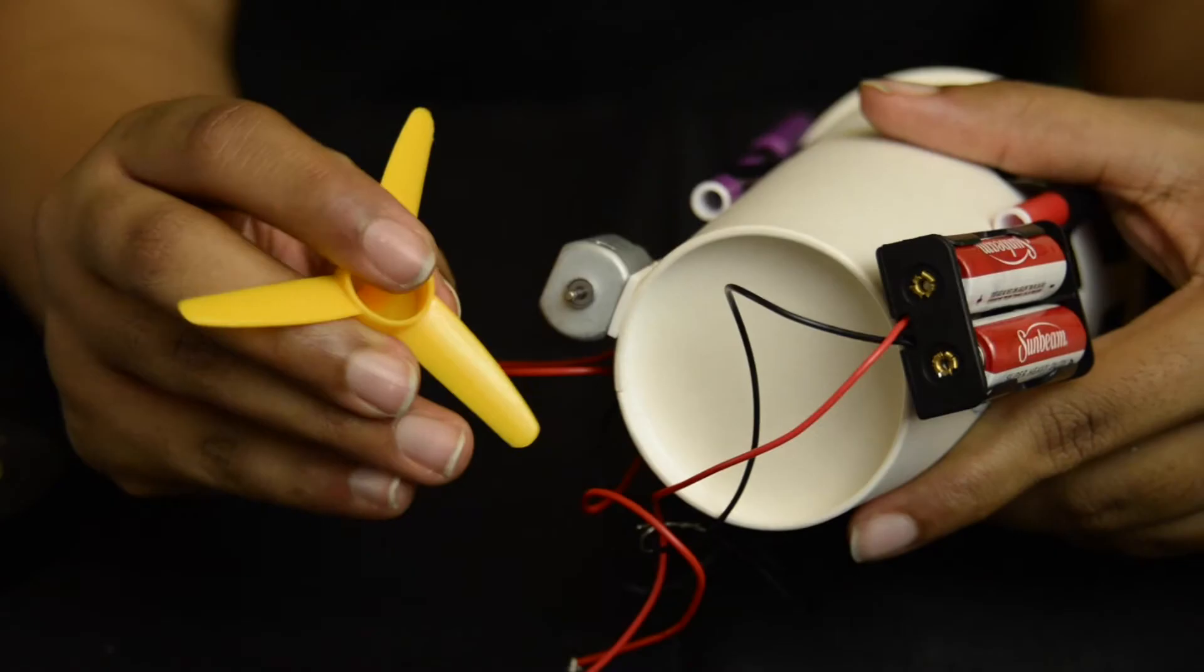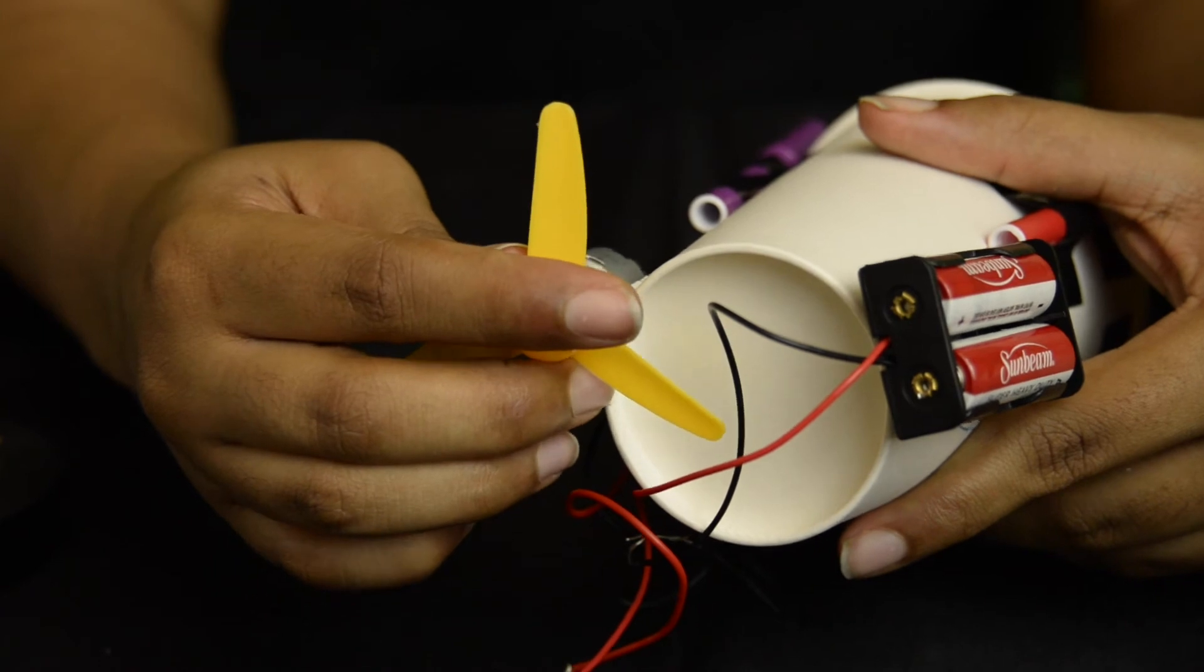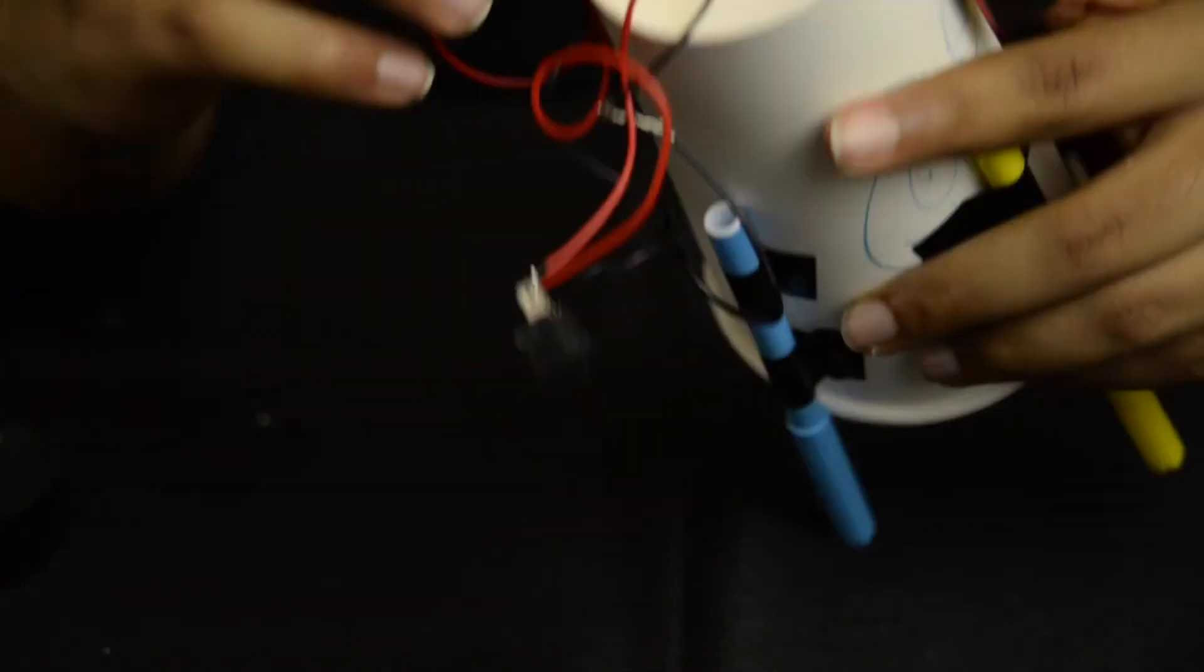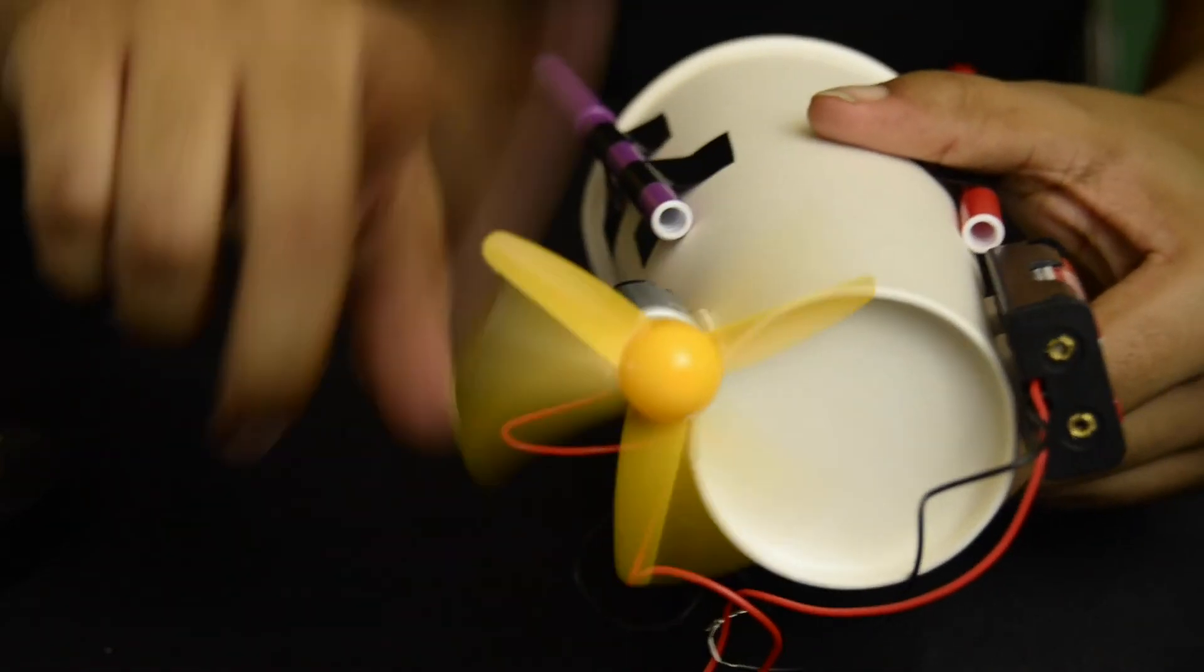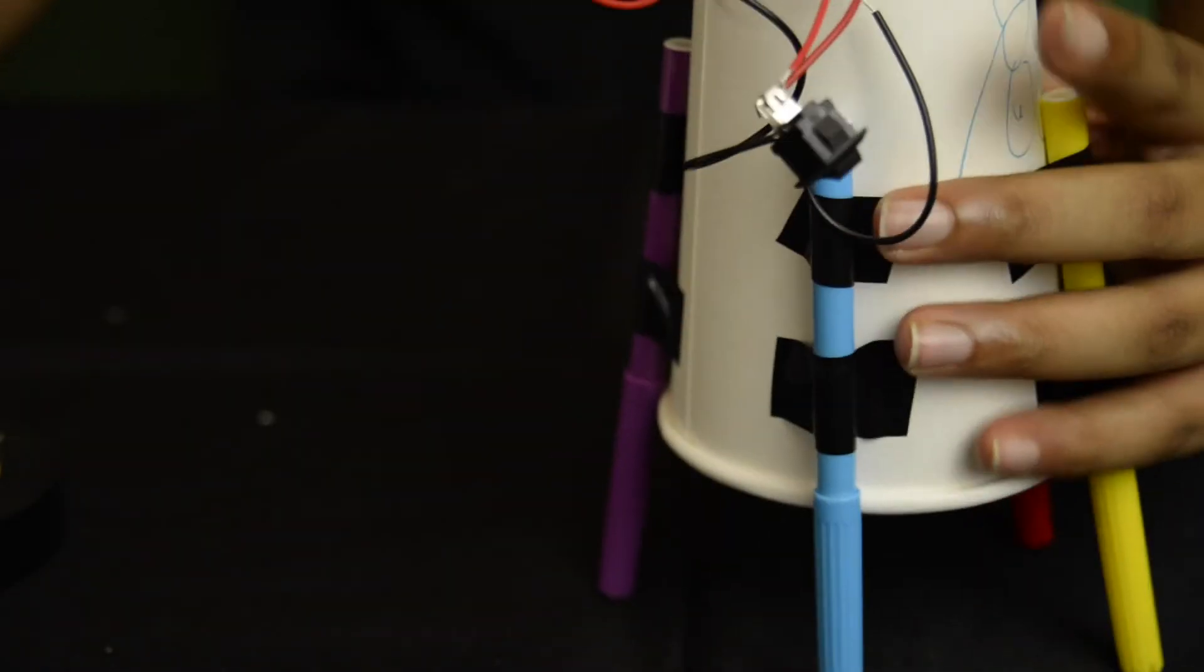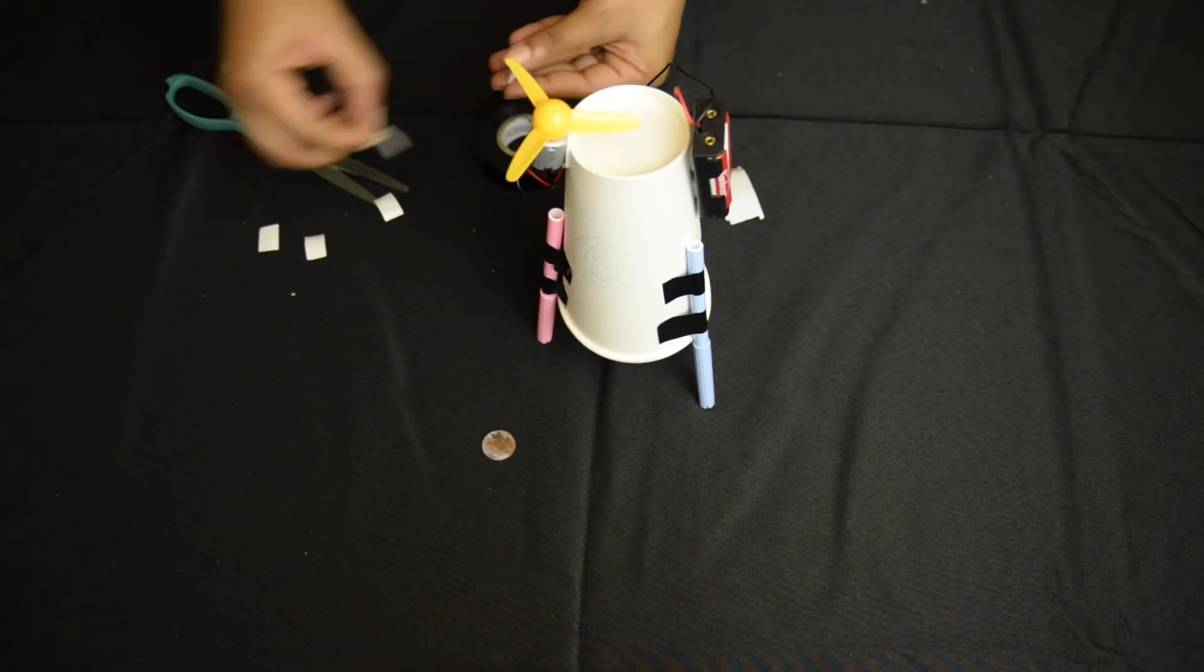Now grab the propeller and place it on the motor stem before attaching the motor onto the opposite side of the batteries. Check that everything is secure and make sure the motor is high enough so that the propeller can spin freely.